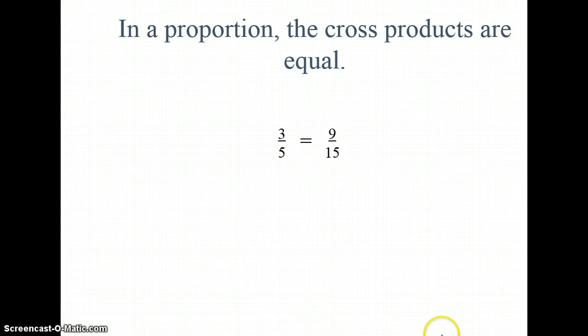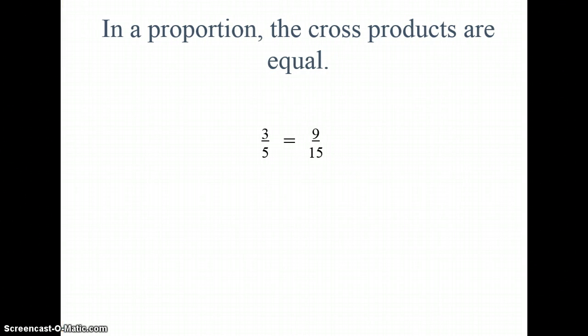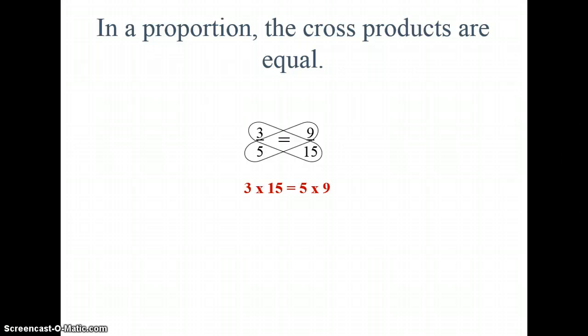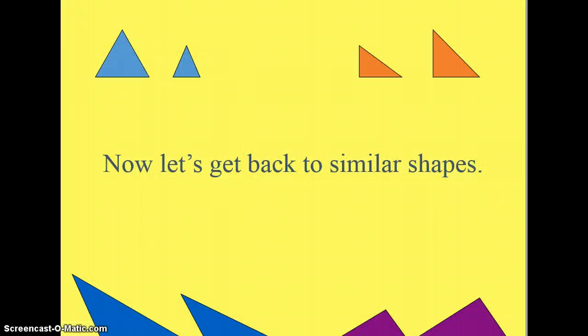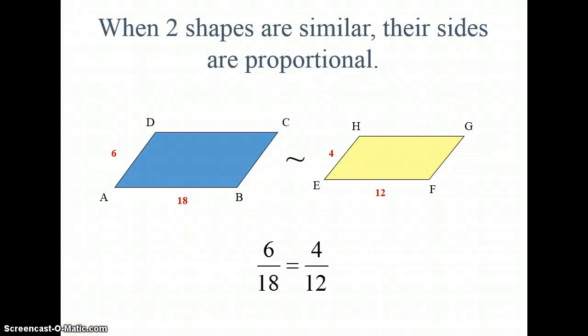In a proportion, the cross products are going to be equal. We talked about that. So if I multiply 3 times 15, I get 45. And 5 times 9 is also 45. So let's get back to similar shapes. When two shapes are similar, their sides are proportional. And this is just like the example we just looked at. The cross products are equal.